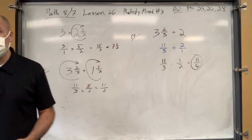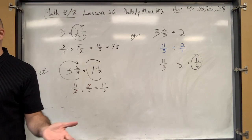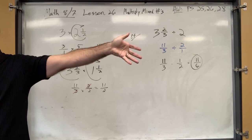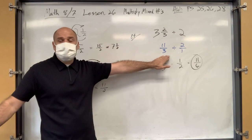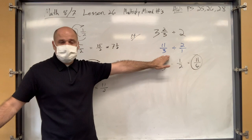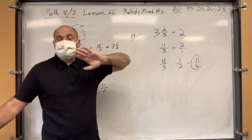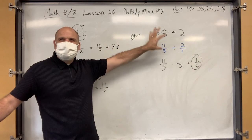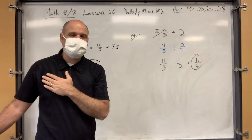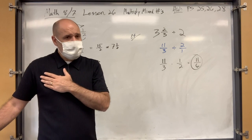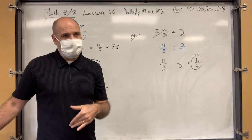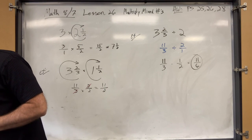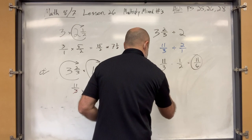If you can multiply mixed numbers, you can certainly divide mixed numbers, because division problems are just multiplication problems with the second number flipped upside down. A very common mistake is trying to convert to an improper fraction and flop the second fraction at the same time — that's too much at once. Change to improper fractions first, then copy, dot, flop.